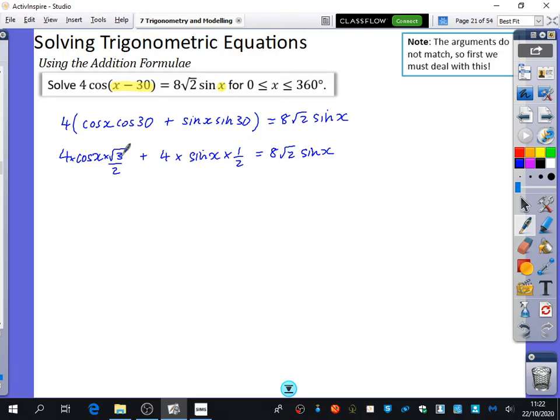So this is 4 times √3 over 2. That's 2√3 cos x. Then I've got 4 times a half, which is 2 sin x. And that's equal to 8√2 sin x. And now the arguments are all the same as each other. So this is now the same as what we would have done in the end of year 12 maths. We can now solve this equation because the arguments match.